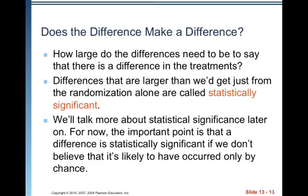How large do differences need to be to say that there is a true difference in treatments? Differences that are larger than what we get just from randomization alone — just from chance — are called statistically significant. The important thing for now is that a difference is statistically significant if we don't believe it is likely to have occurred only by chance.